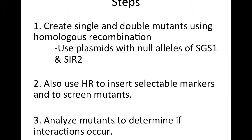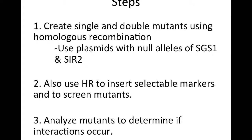Finally, we will screen the mutants using URA3 and ADE6 backgrounds to determine expression. We used URA3 inserted between two MAT loci as a marker for SGS1 expression, and ADE6 inserted at the telomere region as a marker for SIR2 expression.